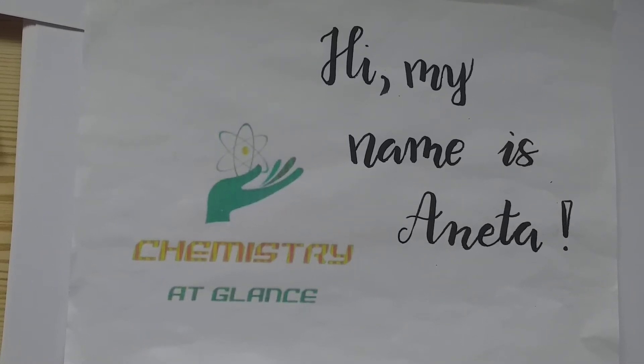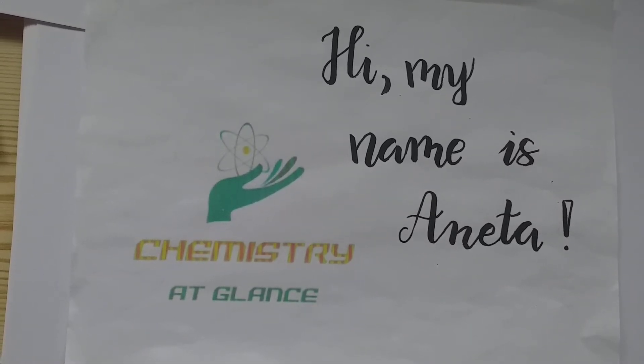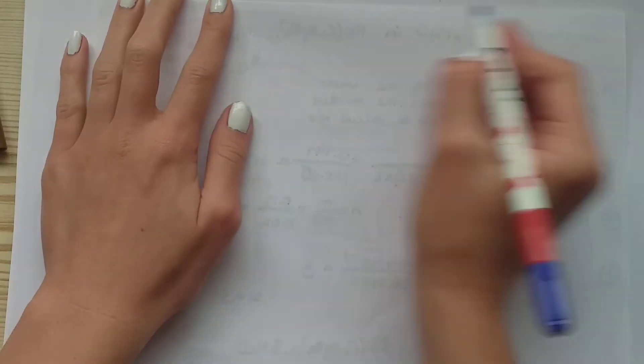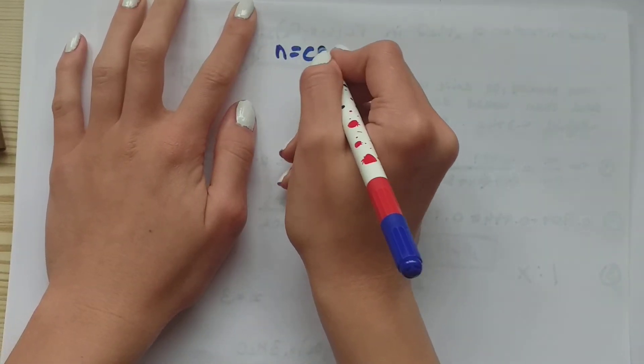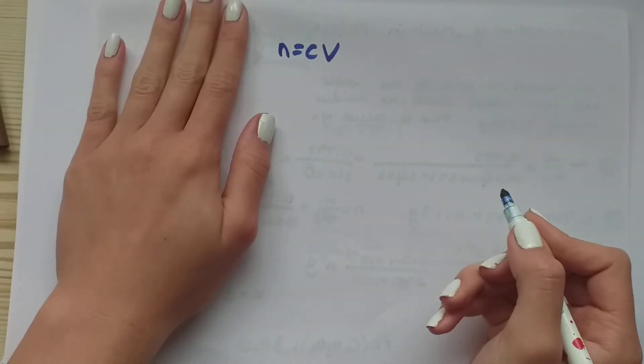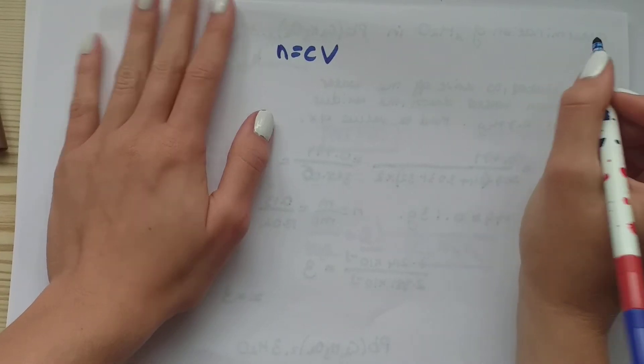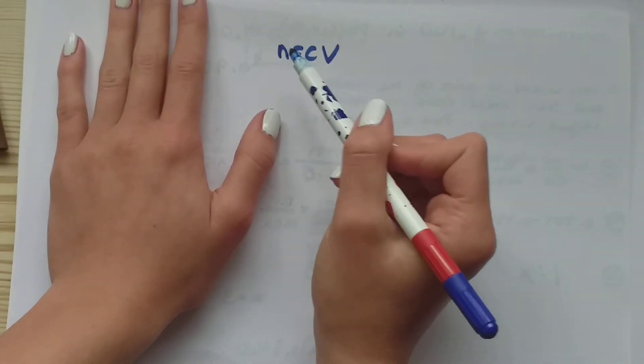Hi, my name is Aneta and this is Chemistry at Glance. In today's video, the equation that we're going to work with is n equals CV. So we're moving out from the n equals mass over mr, now we're focusing on this equation.